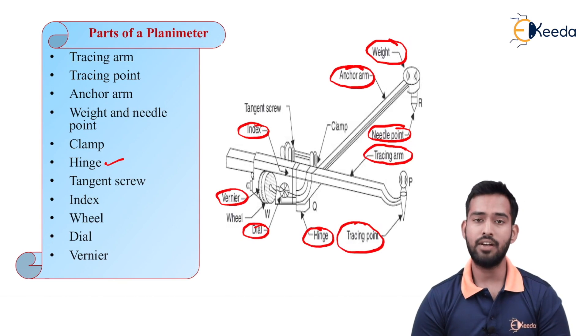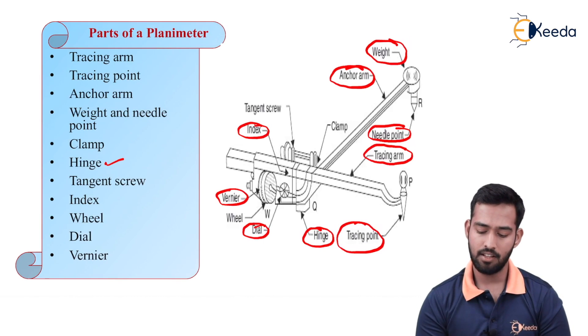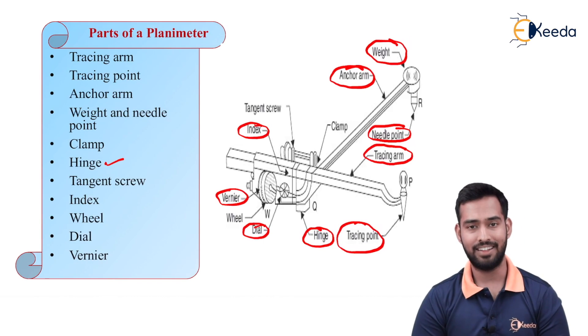Then, we have index for vernier on which we will get a dial on which we have to calculate the readings. So while calculating readings, we require three parameters. We require a dial, a vernier and index from which we will be getting the reading of your area.